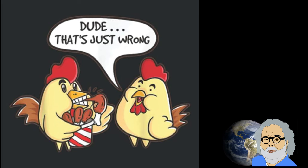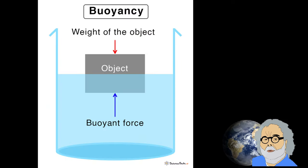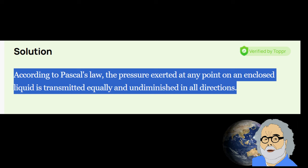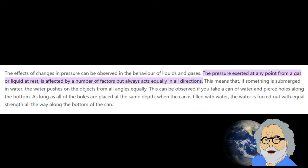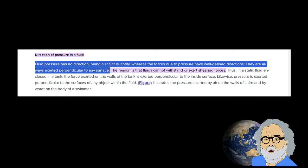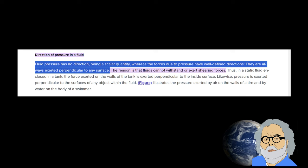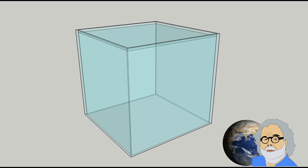What is the real explanation of how buoyancy works? First of all, we have to agree upon this: the pressure in liquids and gases, exerted at any point from a gas or liquid at rest, is affected by a number of factors but always acts equally in all directions. The force exerted by a fluid on a surface always acts perpendicular to that surface. This is important for why buoyancy works opposite to gravity.